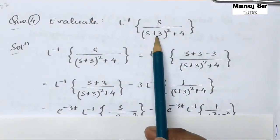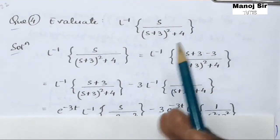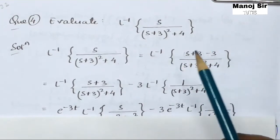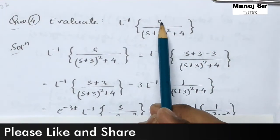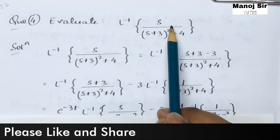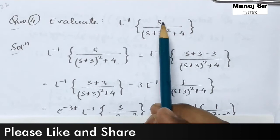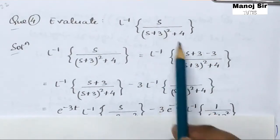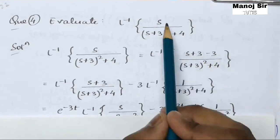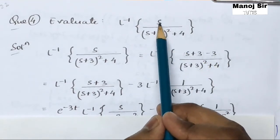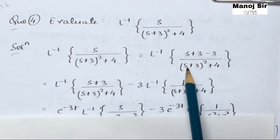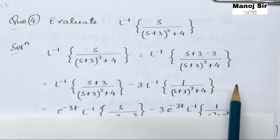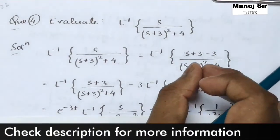Since we have (s+3)² + 4 in the denominator, because of this (s+3) we need to apply the shifting property first. But before applying the shifting property, we need to have (s+3) in the numerator part also. So we rewrite s in the numerator as (s+3) − 3, simply adding and subtracting 3.